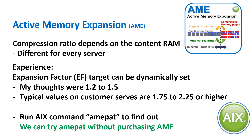Initially, the recommendation was not to go too mad — aim for an expansion factor of 1.2 to 1.5, that's 20% to 50% extra RAM. In the meantime, we've quizzed customers and the numbers they come back with are 1.75 to 2.25 — putting it in the middle, that's 2, doubling the size of memory. They've been running with these for a long time. You can use the AMEPAT command to find out what your memory pages' compression ratios will be and the effects AME will actually have, even if you haven't purchased AME yet.